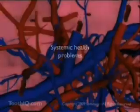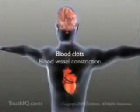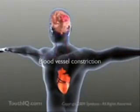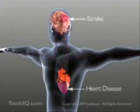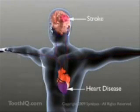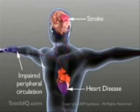Periodontal bacteria can enter the body's circulatory system through leaky blood vessels. Once inside, the bacteria can lead to blood clots and inflamed vessels, which constrict in diameter, leading to strokes, heart disease, heart attacks, and poor circulation in the extremities.